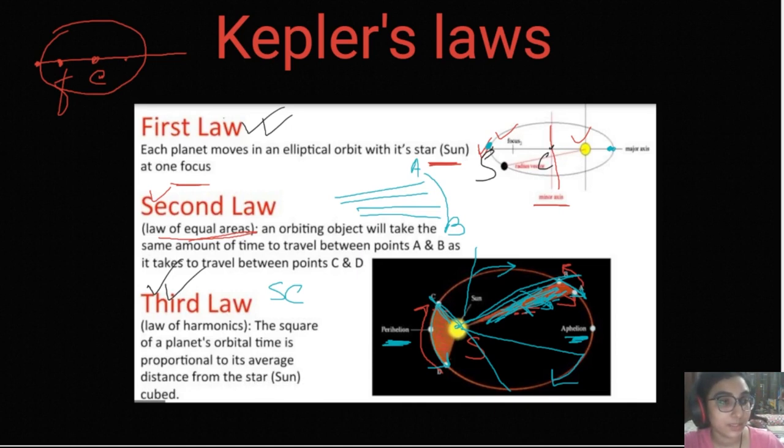Let me just write it down here again. T squared is directly proportional to d cubed. And this also helped Newton in further application of the gravitational law.